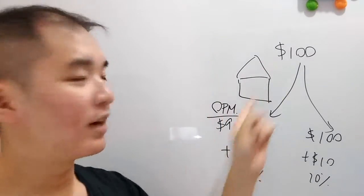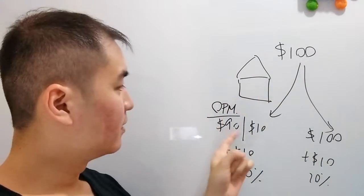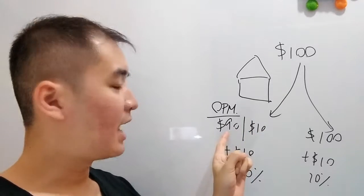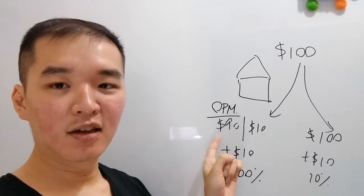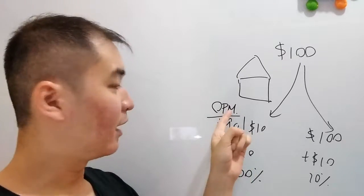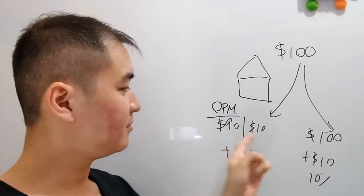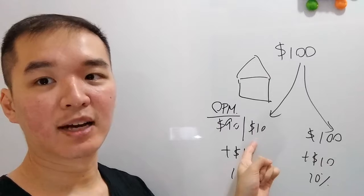Now, what if I use a down payment? Then essentially I borrow $90 from someone else and OPM means other people's money. And then I put in $10 of my own.